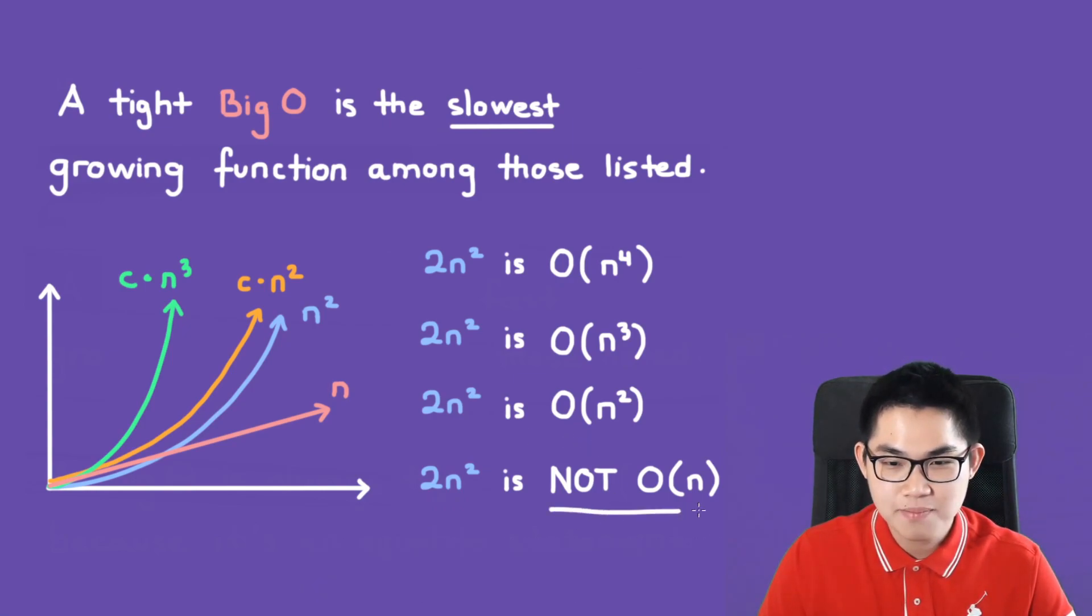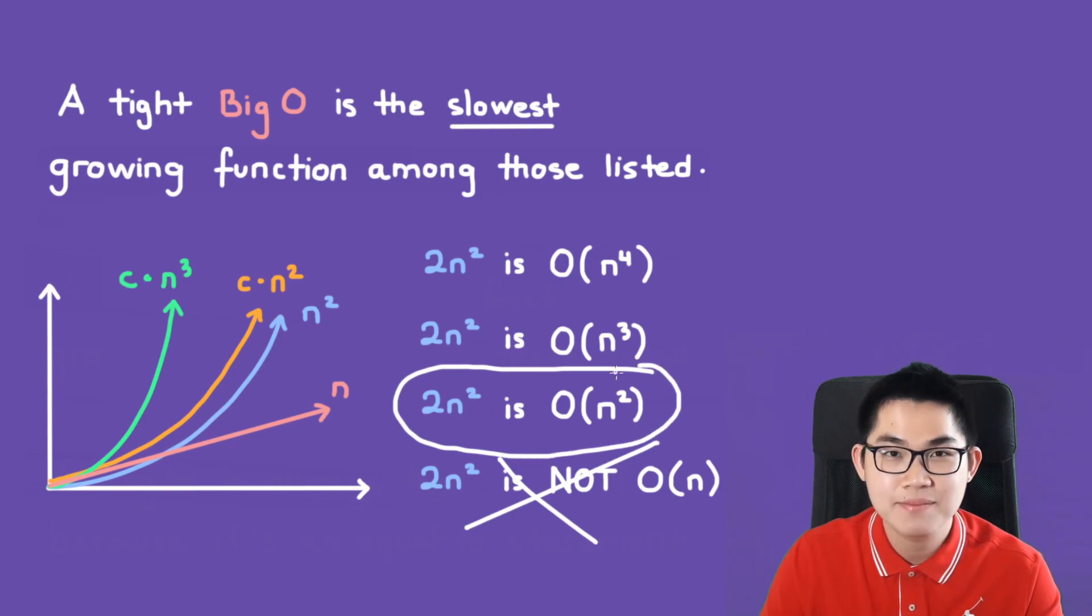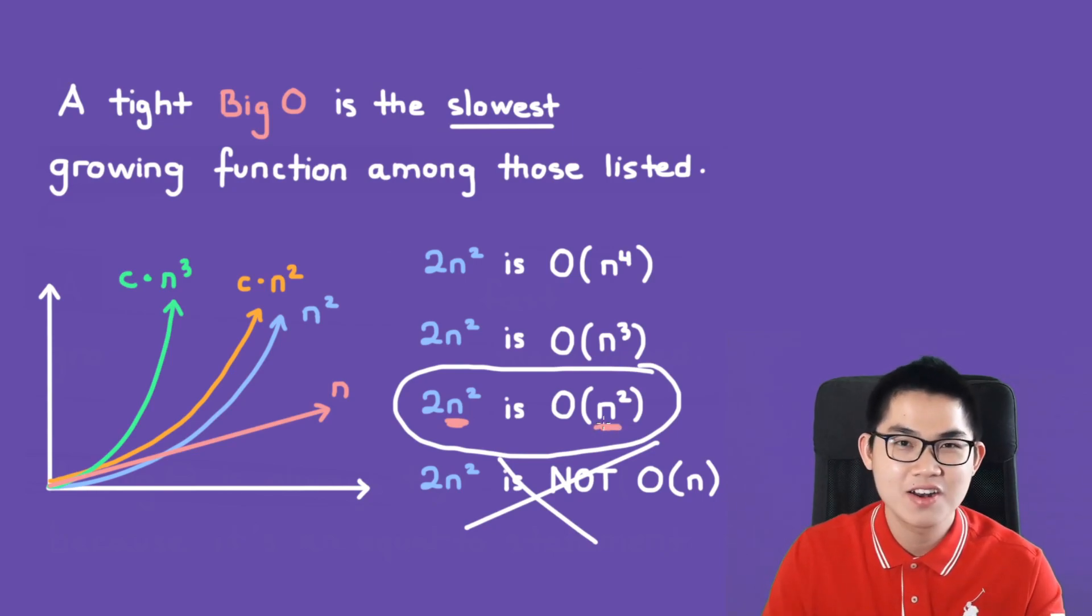So because this is not big O, you can simply ignore this one. And now you have three options left. According to our definition, tight big O is the slowest growing function among those listed. We can see that n² is the slowest one. So this one here would be the tight big O. And you can even notice that this is n² and this is n², so they're kind of like on the same order.